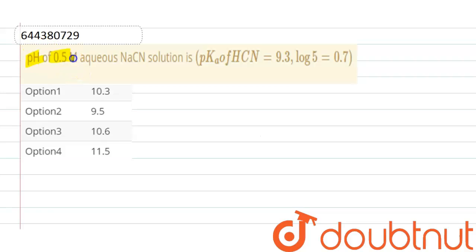pH of 0.5 molar aqueous NaCN solution. So here we have to find out pH of this salt solution.